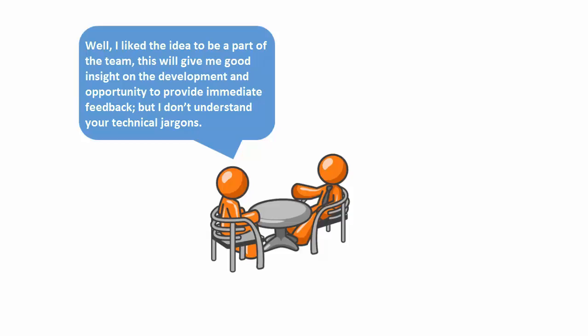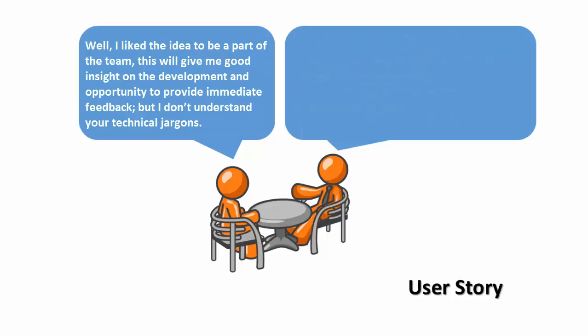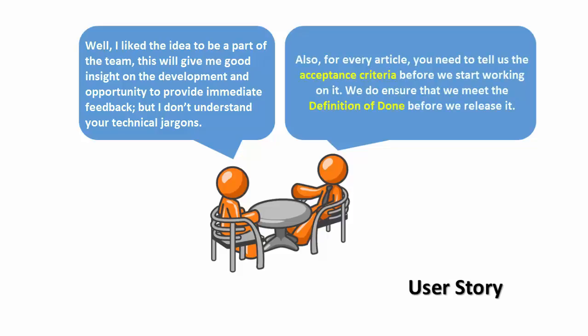But I don't understand your technical jargons. That should not be a problem. You need to tell us three things about every requirement. First, the type of user — who is the intended end user. Second, the requirement detail — what exactly are you looking for. Third, the purpose — why is it needed. This is called the user story format. Also, for every article, you need to tell us the acceptance criteria before we start working on it.